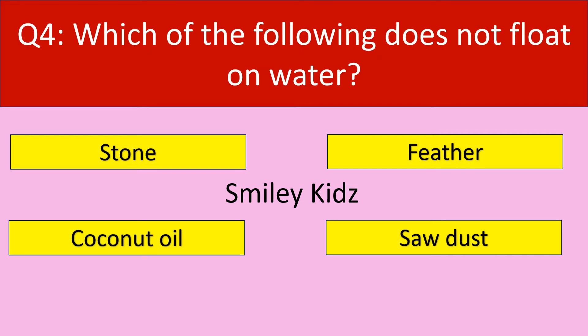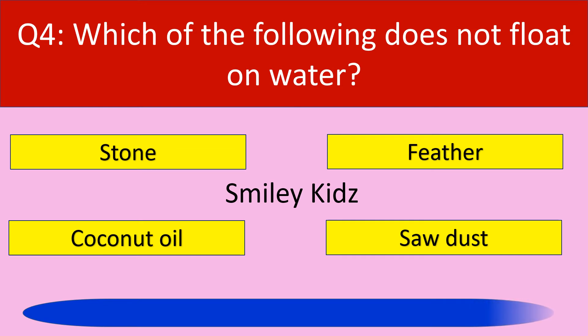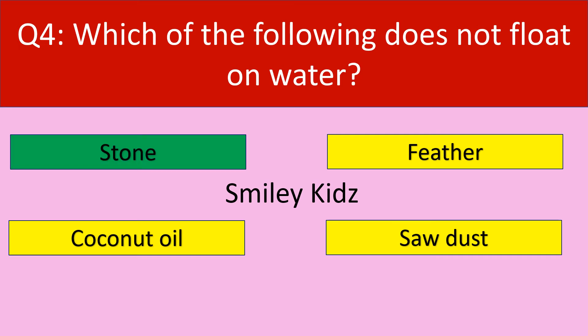Question number four. Which of the following does not float on water? Options are stone, feather, coconut oil, and sawdust. Your time starts now. Your time is up. The correct answer is stone. Stone does not float on water.